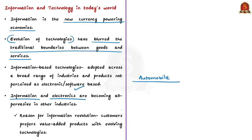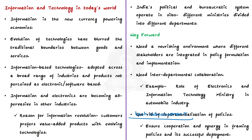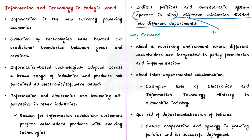This has manifested in increasing digitisation and electronification of industries. Customers globally prefer value-added products utilising evolving technologies for a greater user experience—for example, when buying a car, consumers now consider advanced sensors and artificial intelligence. However, our political and bureaucratic system is built on different ministries divided into departments—heavy industries, electronics, agriculture, etc.—which have tended to operate in silos. Meanwhile, digitisation and data analytics are becoming inevitable components of almost all products and services, blurring traditional boundaries between different stakeholders.